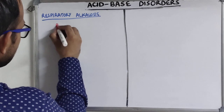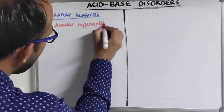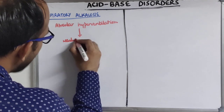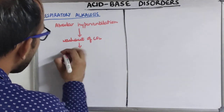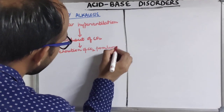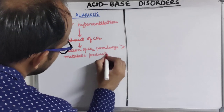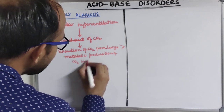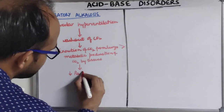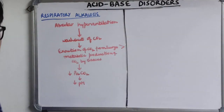As a result of alveolar hyperventilation, there is washout of carbon dioxide from the body. Excretion of carbon dioxide from the lungs exceeds the metabolic production of carbon dioxide by tissues. This results in lower arterial carbon dioxide tension and thus a decrease in pH — this is the pathophysiology of respiratory alkalosis.